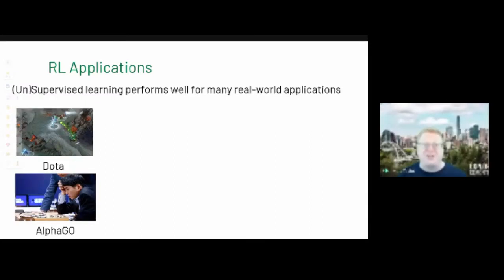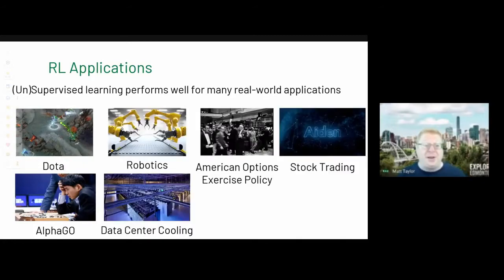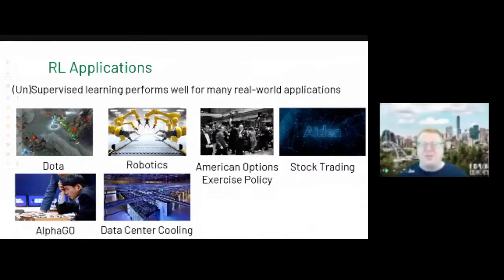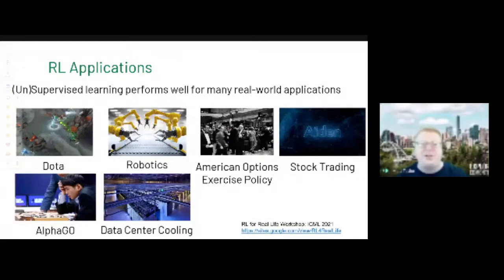We've seen great successes in Go and Dota, but businesses don't care about those. There are other successes: a favorite is the data center cooling from DeepMind, and work done at Borealis and Royal Bank of Canada on stock trading — they have a deployed deep RL agent trading stocks. As a community, we can convince ourselves that reinforcement learning is useful.